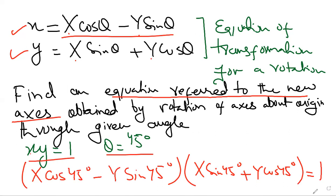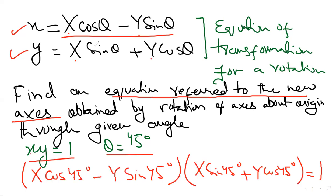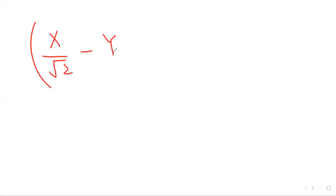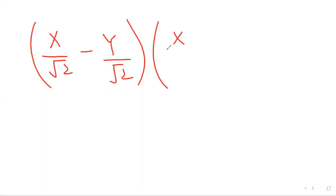We will just calculate the values. cos 45° is 1 upon root 2. sin 45° is also 1 upon root 2. Now x upon root 2 plus y upon root 2 is equal to 1.